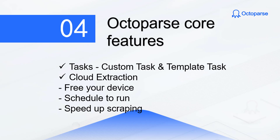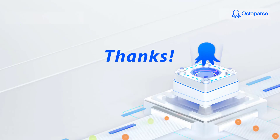Cloud extraction is a special feature of Octoparse. It means to run your task on our cloud servers, so that it can get data 24/7 without using your own computer. You can even schedule the scraping at any frequency you want. There is no need to worry about hardware limitations. Data extracted will be saved in the cloud and can be accessed at any time from any device. Cloud extraction also helps to speed up the scraping a lot. That's all for the Octoparse basic introductions. You can check out the other videos to learn more about how to use Octoparse. If you have any questions, feel free to contact us.